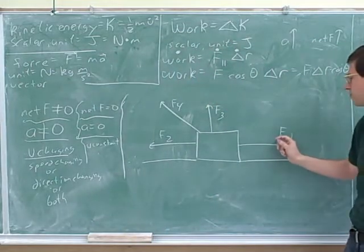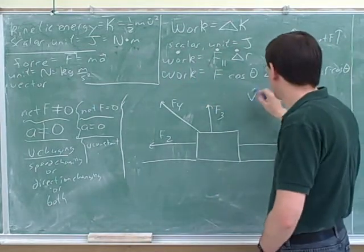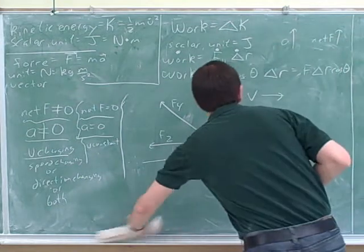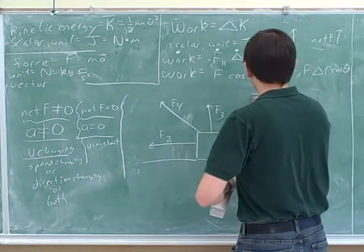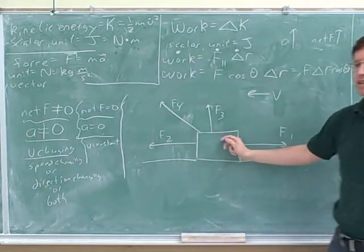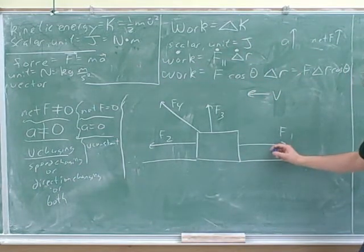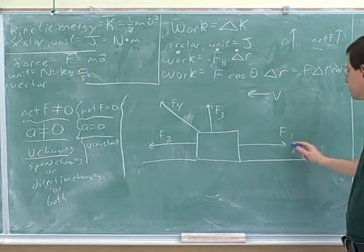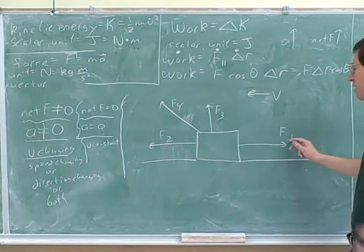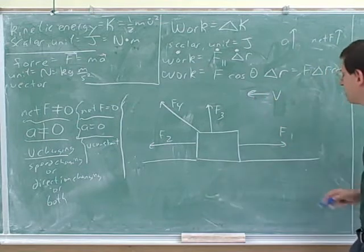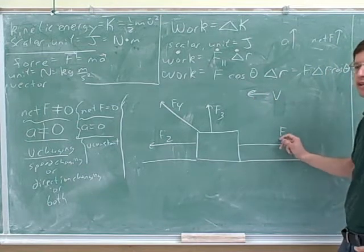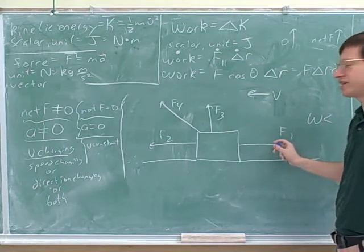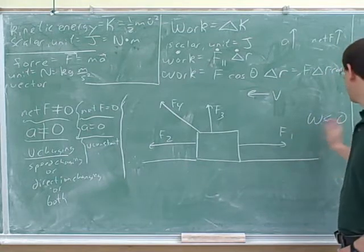So here we have an object that's moving to the left. Is this force doing positive work or negative work? Negative — because it's anti-parallel to the velocity. It doesn't matter that this might be in the positive direction; what matters is comparing it to the velocity. This force is slowing the object down, so it's doing negative work.